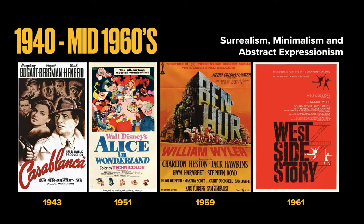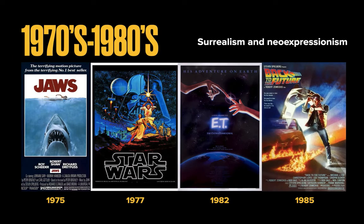Between the 1940s and the 1960s, movie posters began to incorporate Surrealism, Minimalism, and Abstract Expressionism. In 1940s posters, we rarely see scene depictions; character illustrations are more prominent while typography is quieter. By the 1950s, there was more emphasis on typography and subtle clues to the movie in the background. By the 1960s, type played an important part of the layout while illustrations served more as a peripheral role, adorning the typography. Movie posters from this time include 'Casablanca,' 'Alice in Wonderland,' 'Ben-Hur,' and 'West Side Story.'